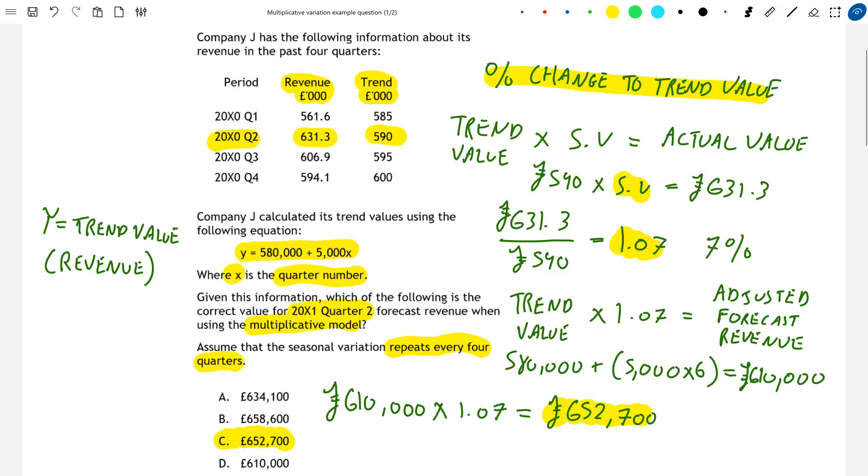And so this is how we can use multiplicative variation in conjunction with a trend equation to make a forecast. So thank you for watching this video and please like and subscribe for more content to help you pass your SEMA exams.